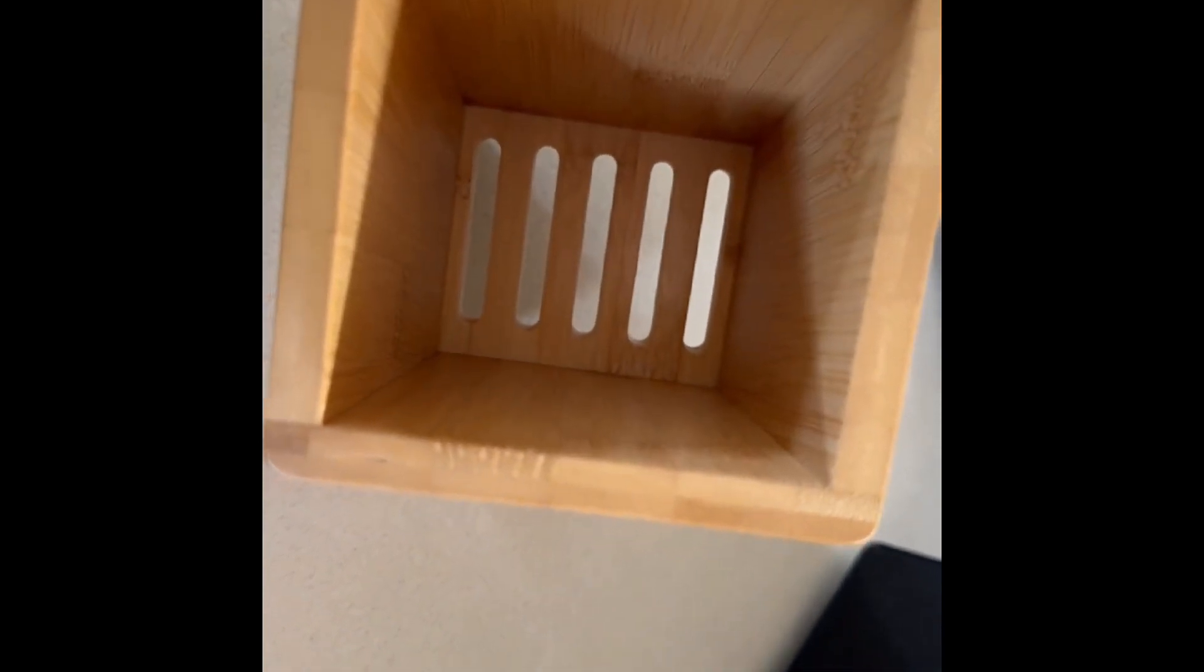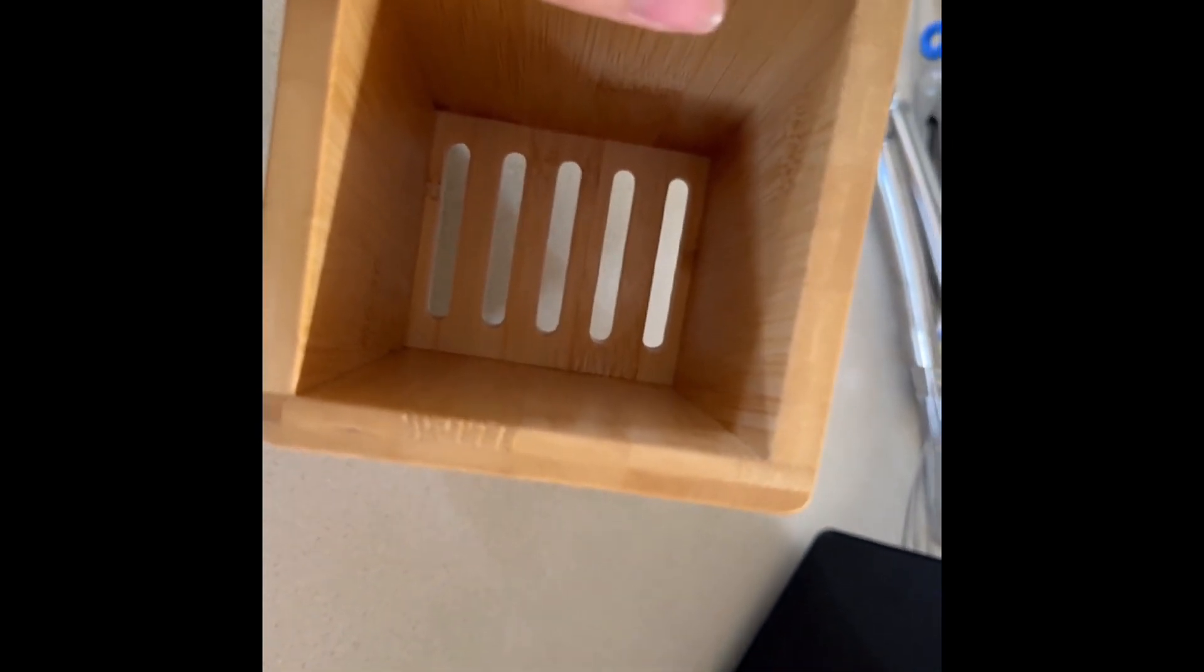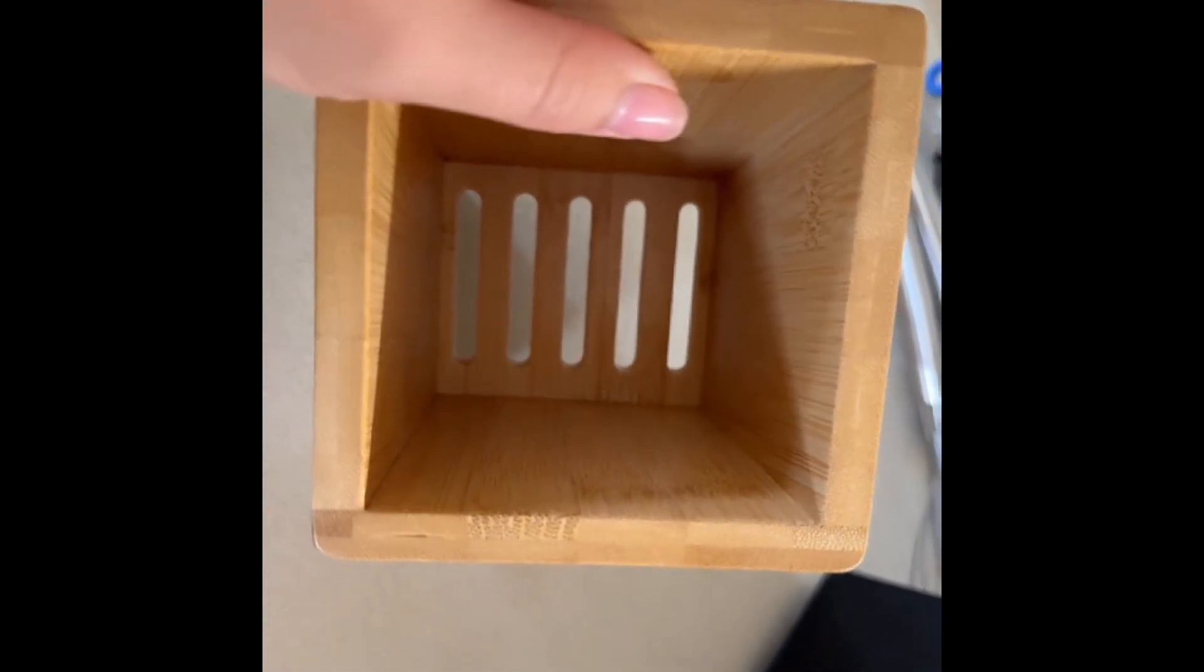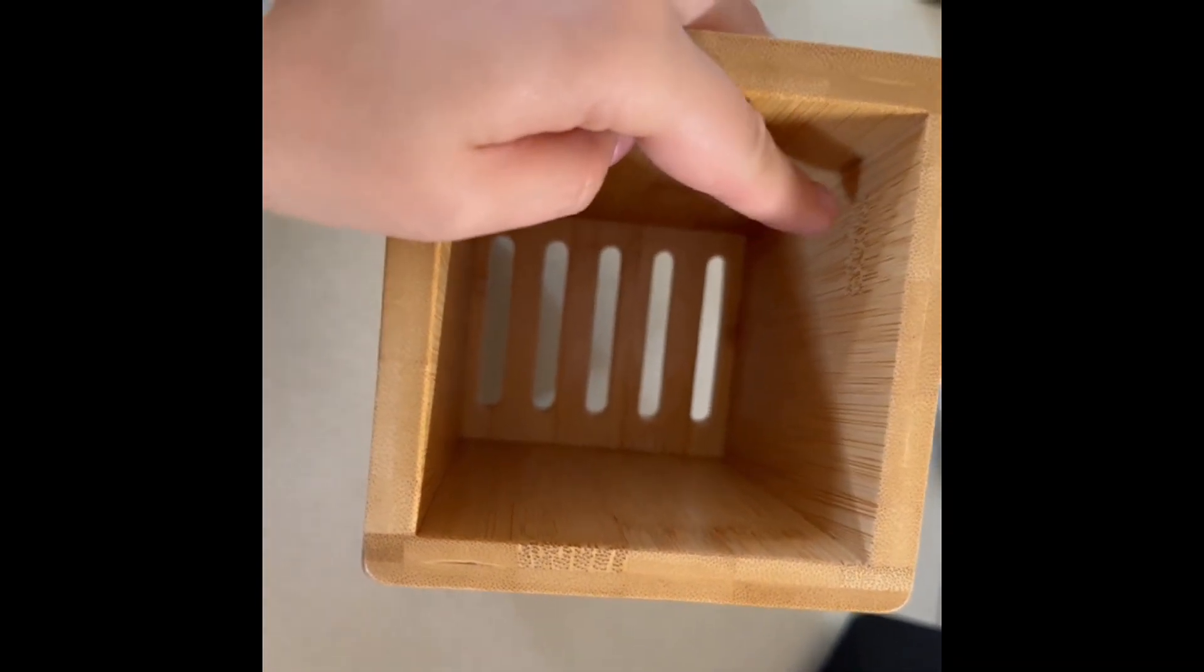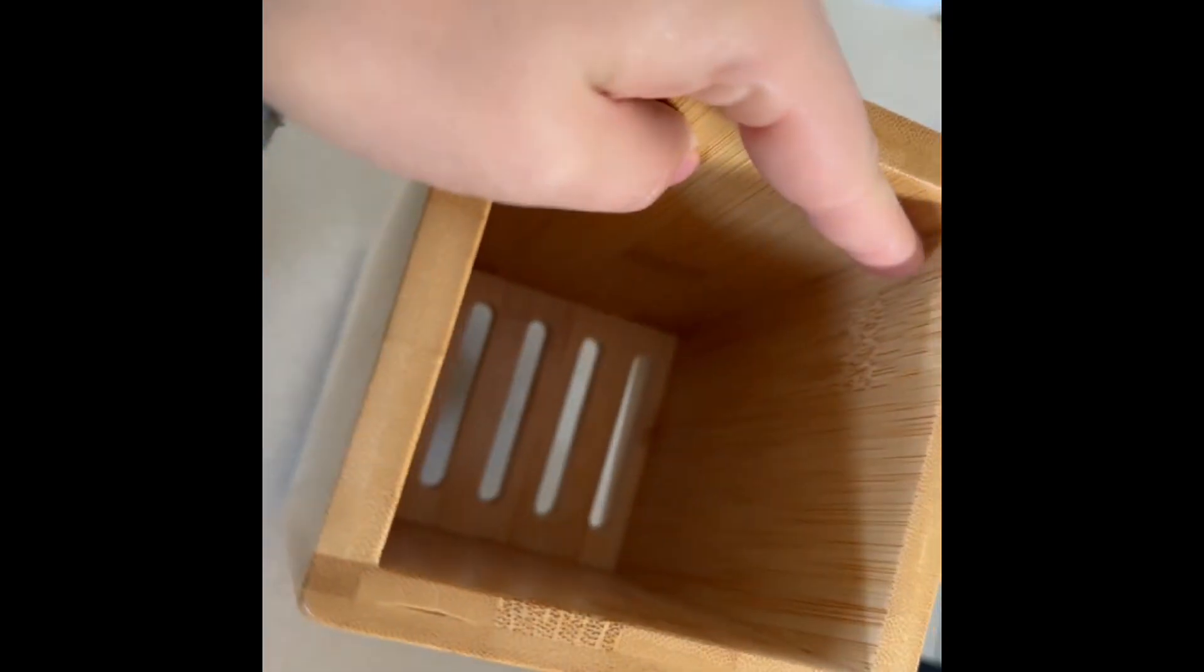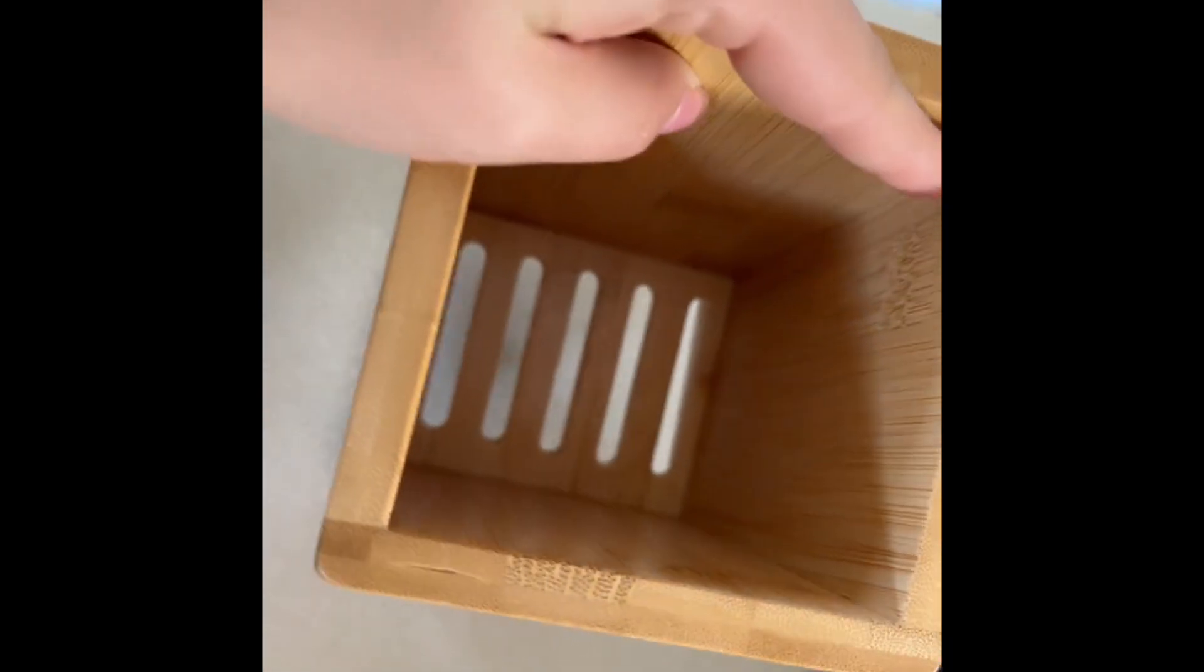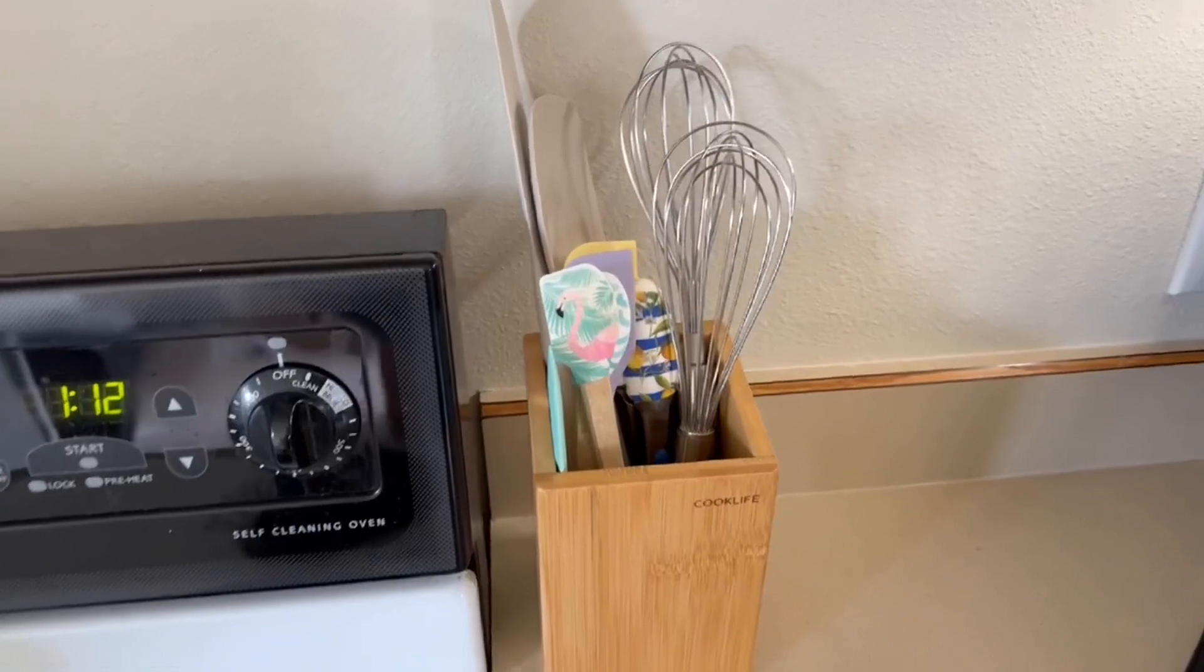I know that I have had a lot of utensil holders in the past that just catch so much dust and debris in the bottoms, and so this one is super open and I can easily just lift it off the counter. If there's anything under I can clean it and then I can clean this itself individually.